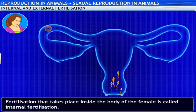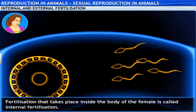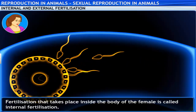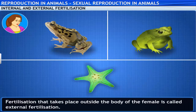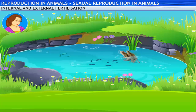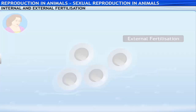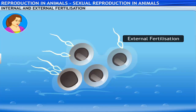In human beings and a variety of other animals like cows and dogs, fertilization takes place inside the body. That's called internal fertilization. Aquatic animals like frogs, toads and starfish are a little different though. In such animals, male gametes and female gametes unite outside the body of the female. This type of fertilization is called external fertilization.